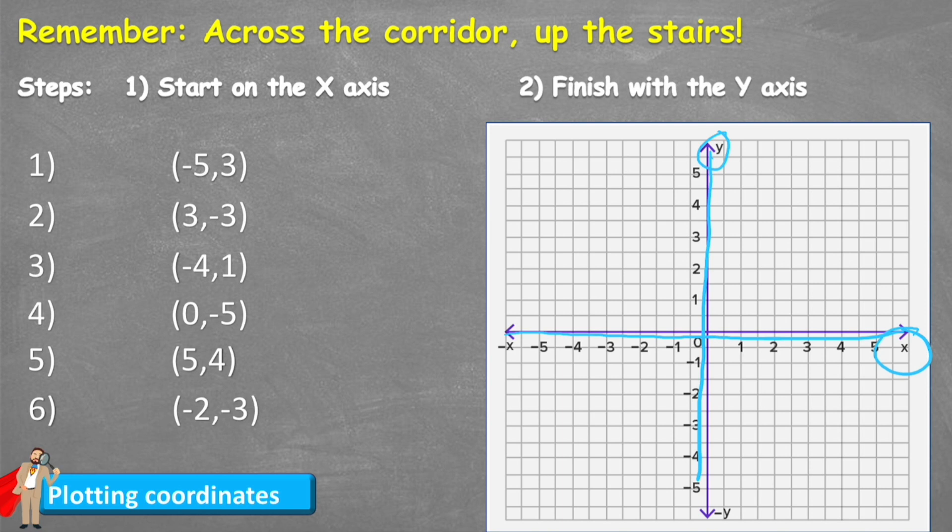And one very important thing to remember is that we go across the corridor and up the stairs. And that refers to going across with the X axis looking like a cross before we go up the stairs. And it refers to the way that we interpret these coordinates.